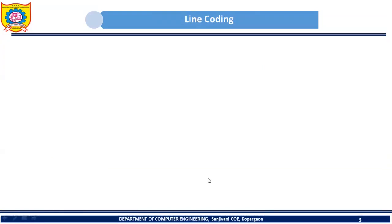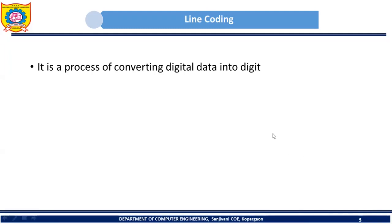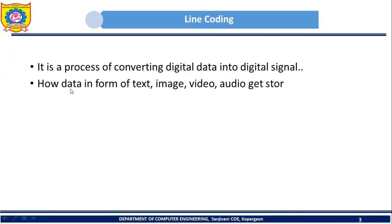Line coding is the process of converting digital data into a digital signal. Consider data in the form of text, image, video, or audio — how does it get stored in memory? We create a file in, say, Microsoft Word and save it. The content of that file gets stored in the form of 1s and 0s.